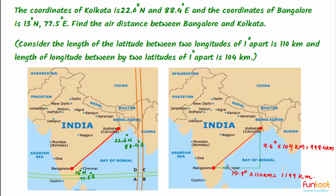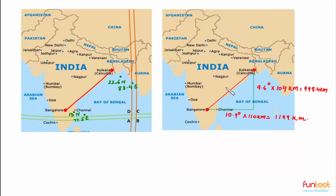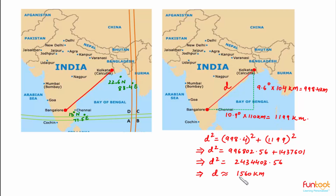Now we can apply the Pythagoras theorem in this right-angled triangle to find the air distance or straight-line distance between Kolkata and Bangalore. If we call this distance D, by application of Pythagoras theorem, D will come approximately equal to 1560 kilometers. So this is the air distance between Bangalore and Kolkata.